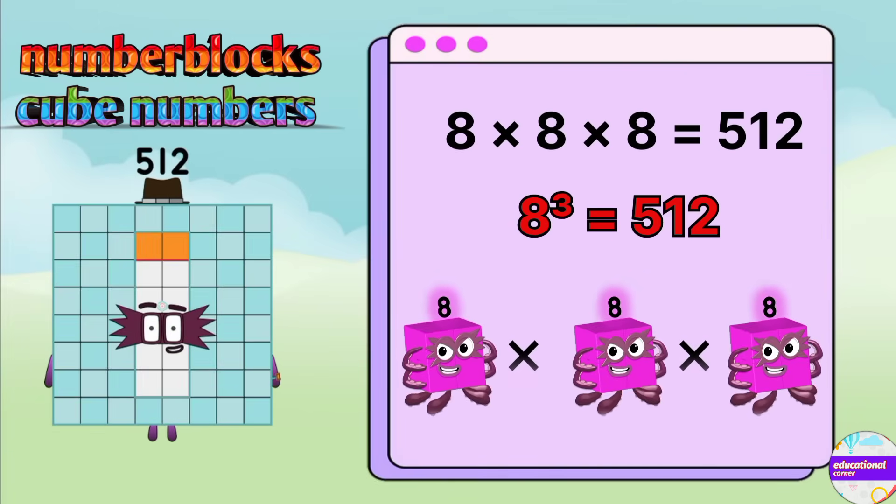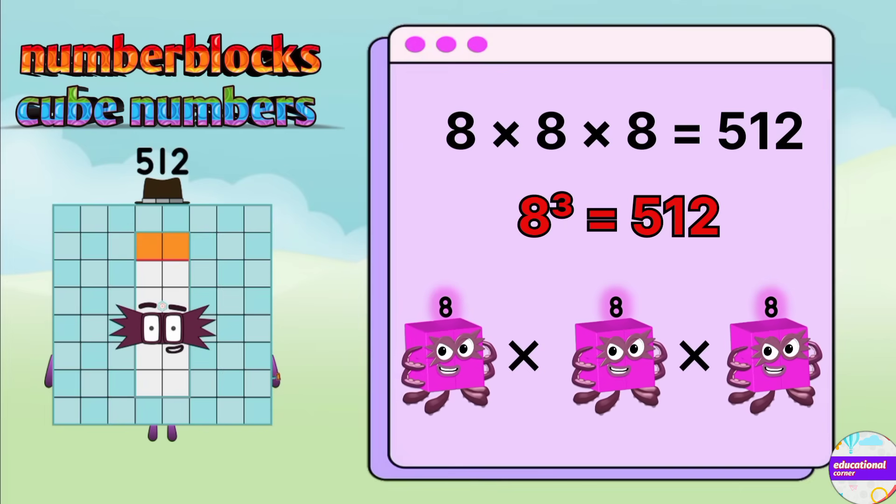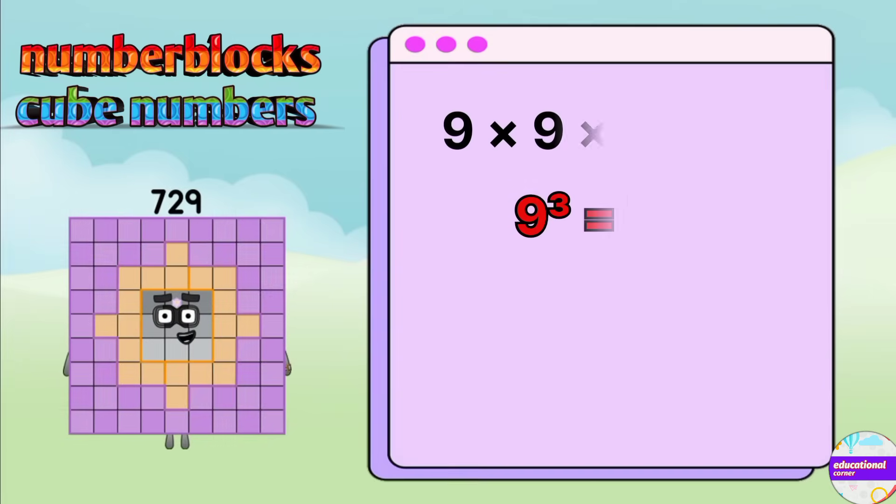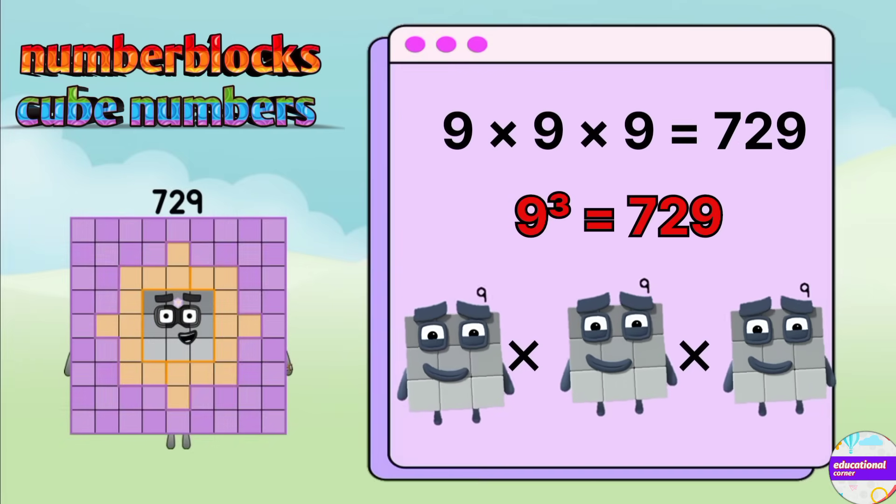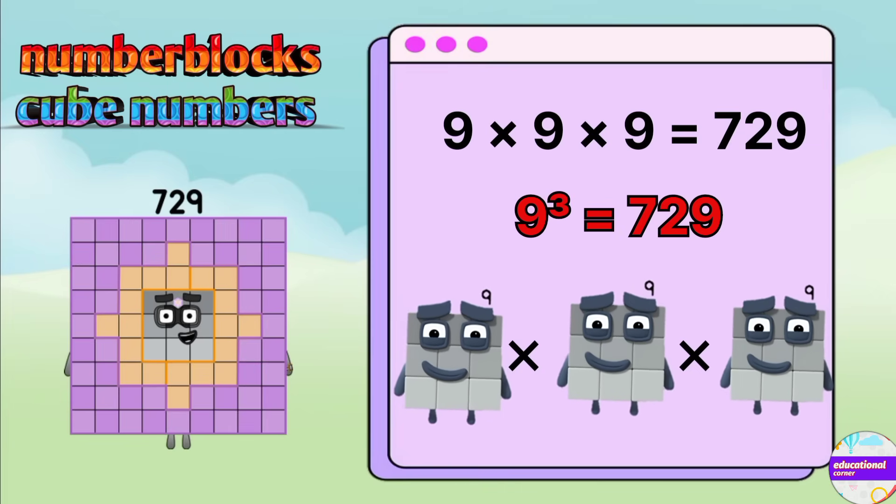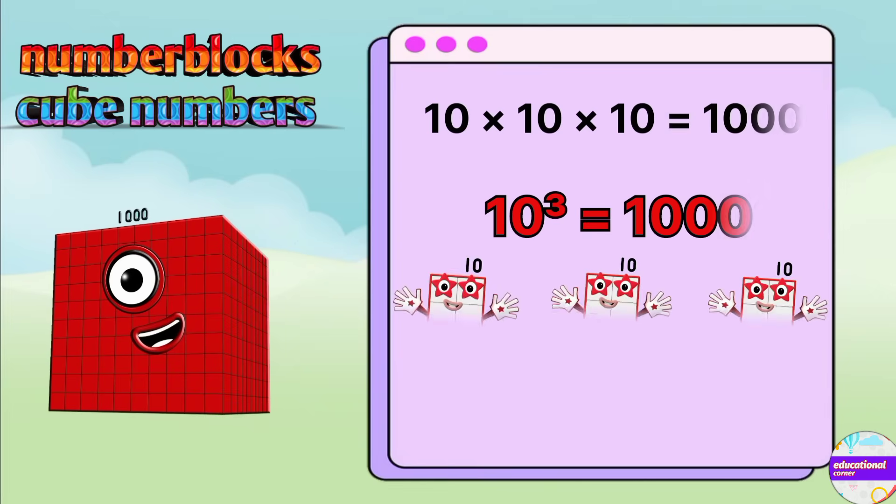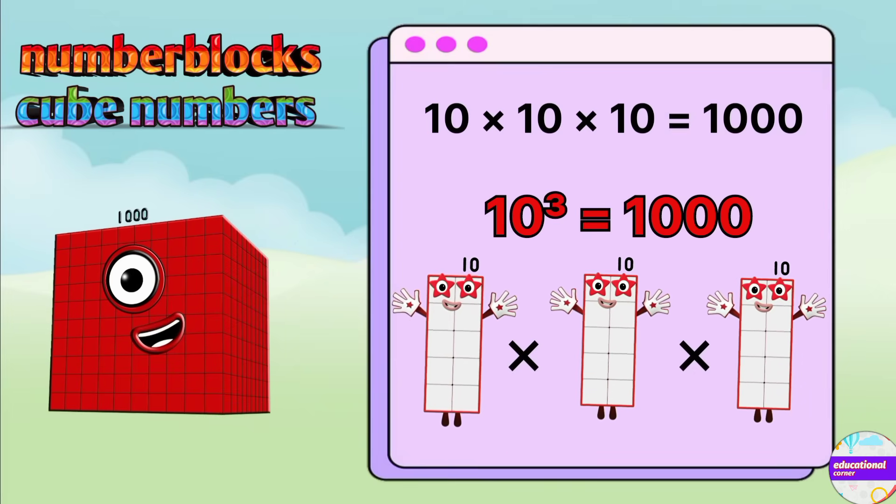512 is a cube of 8. 8 times 8 times 8. 729 is a cube of 9. 9 times 9 times 9. 1000 is a cube of 10. 10 times 10 times 10.